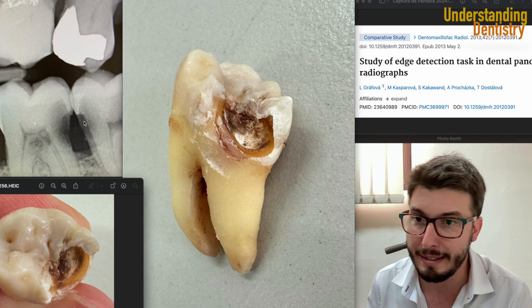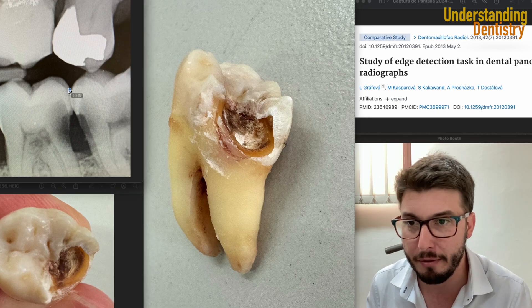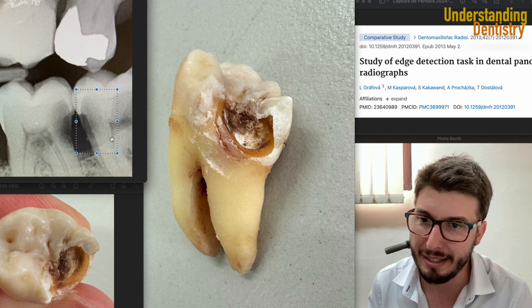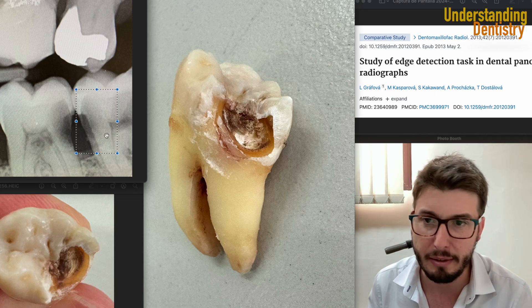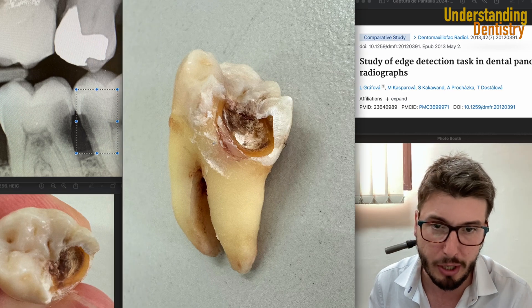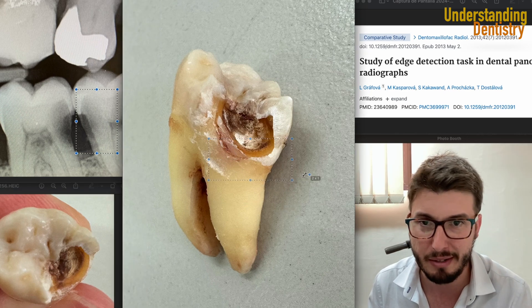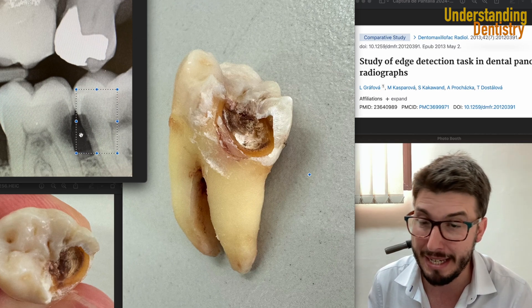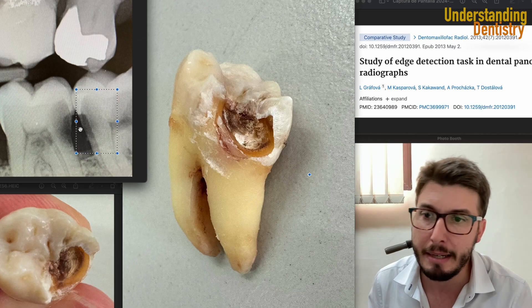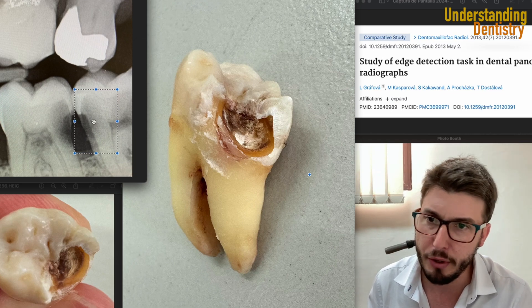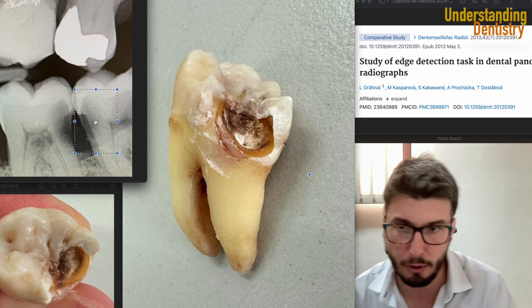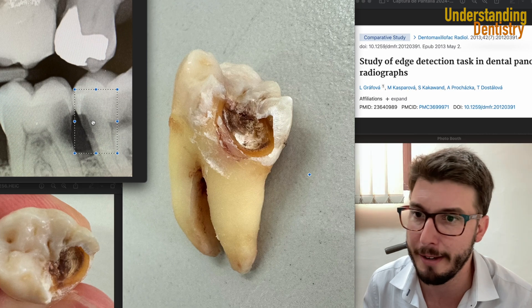So here we have the radiograph showing the caries we're talking about. The lower first molar ended up being extracted because it was non-restorable — take a look at how extensive the caries were. There was also furcation exposure, a huge vertical mesial bone defect, and other criteria for extraction.